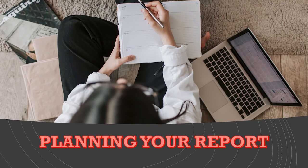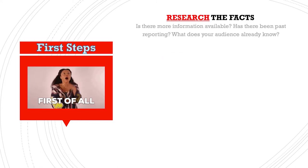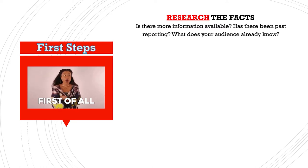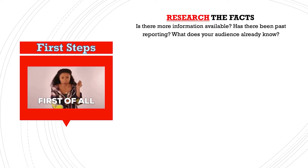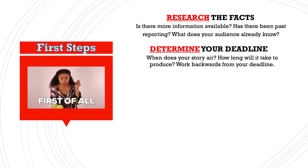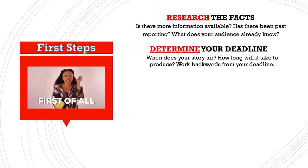So now it's time to plan how you're going to do your report. First, you want to research the facts. Figure out if this is a new story or if there's already information available on it — maybe your audience already knows about it, or someone has already reported on it and you want to make sure your story is adding new information. Then you need to figure out when your deadline is. If your story airs at 6 p.m. that evening, work backwards from that time and figure out how long it will take from beginning to end. In news, it is incredibly important not to miss your deadline.